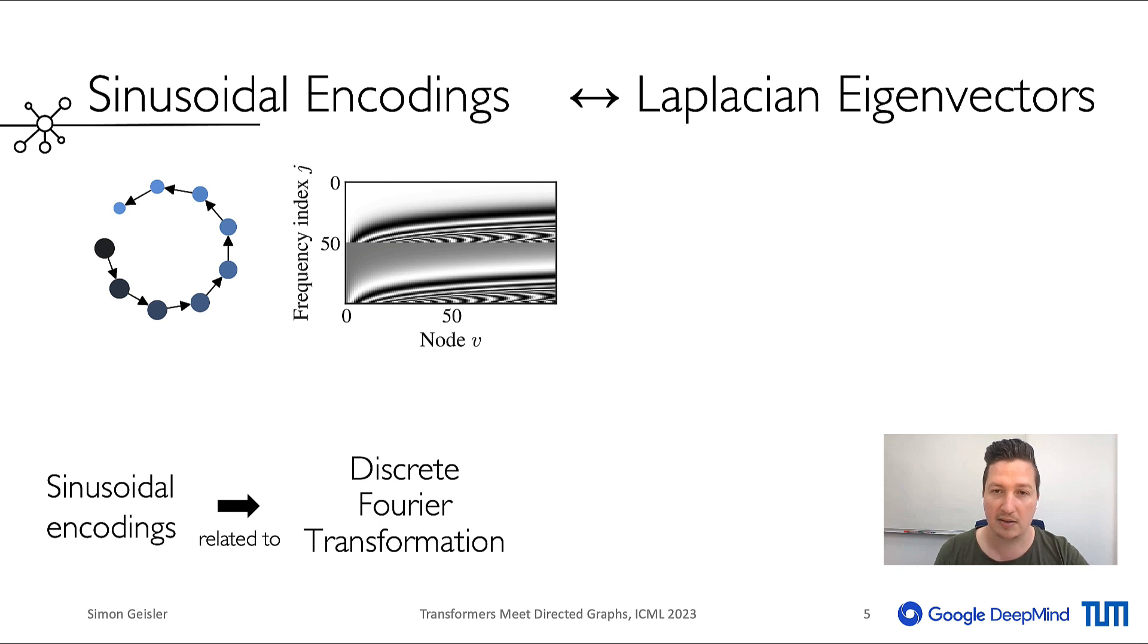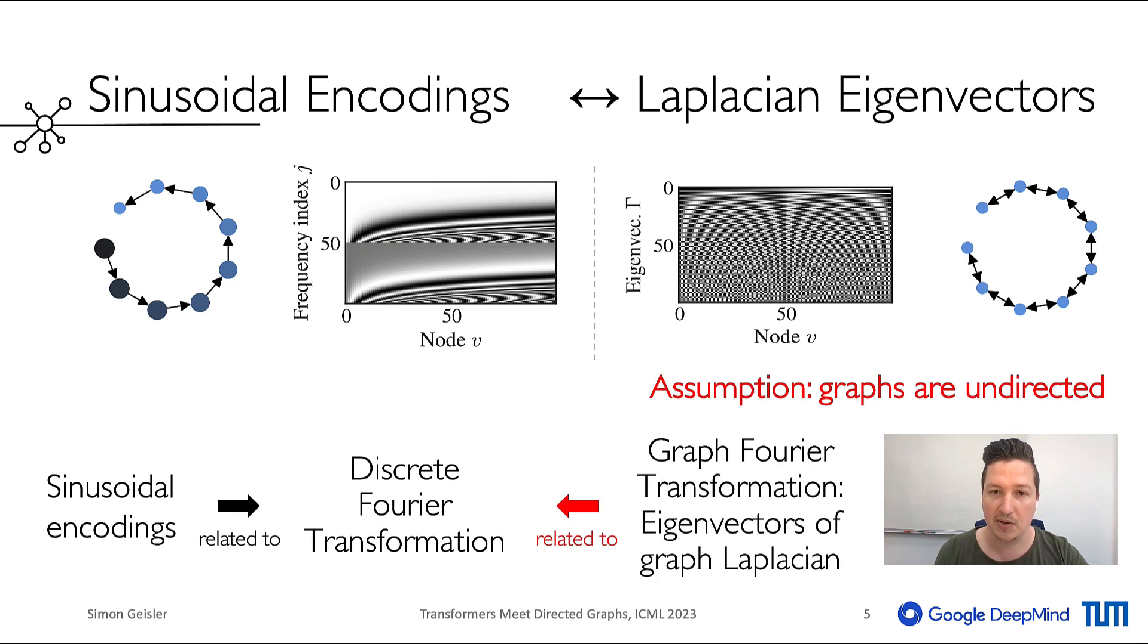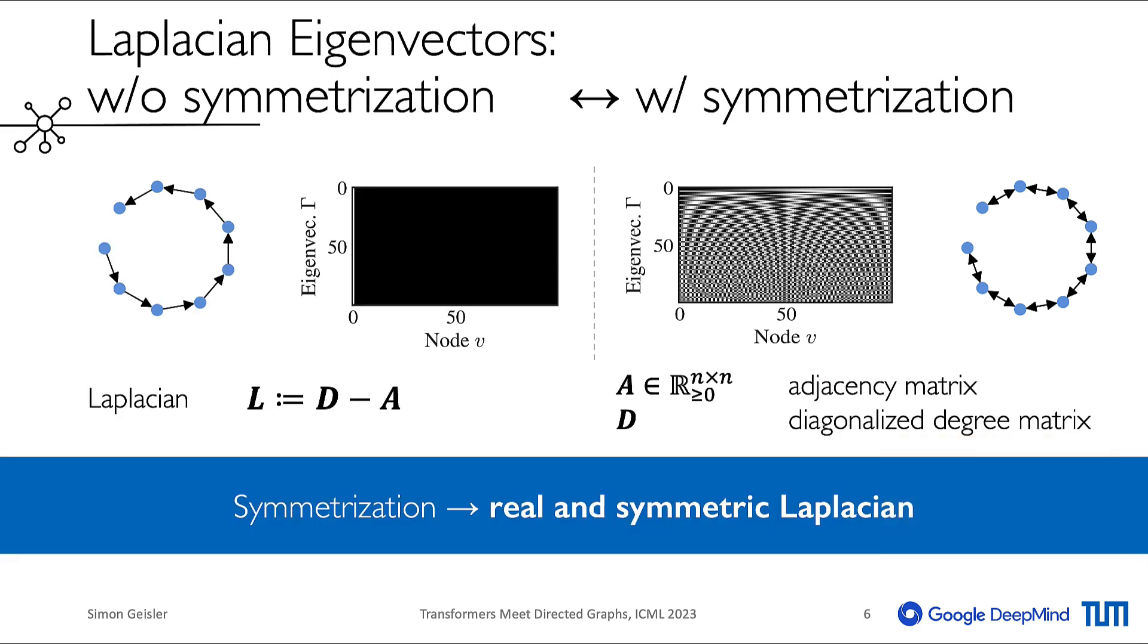These sinusoidal position encodings are conceptually very similar to the sinus and cosinus waves used in the discrete Fourier transformation. This has been realized before, and it was proposed to use the eigenvectors of the graph Laplacian to encode the node position in undirected graphs.